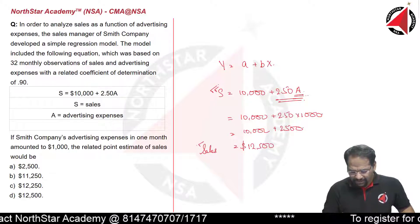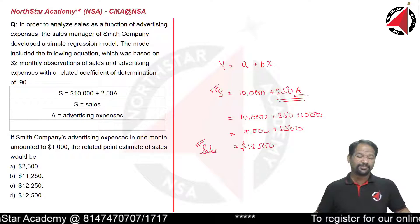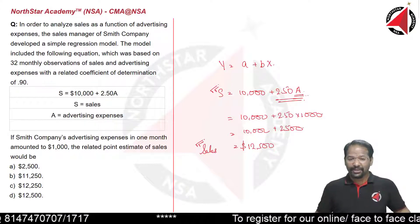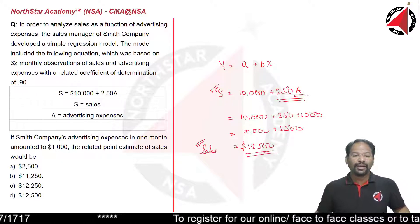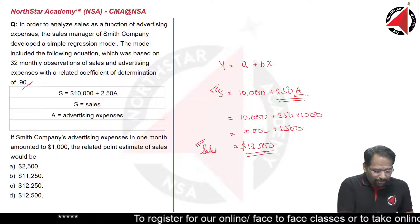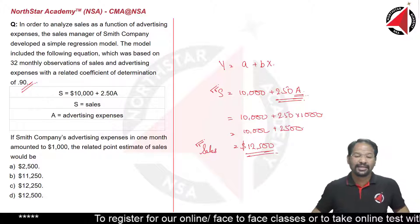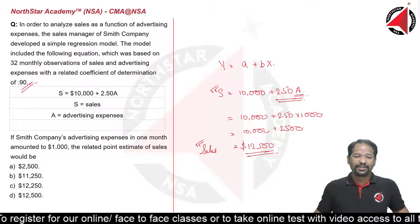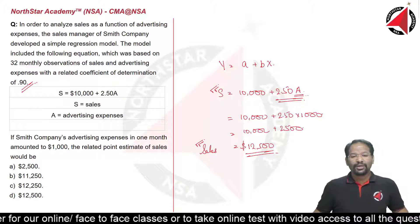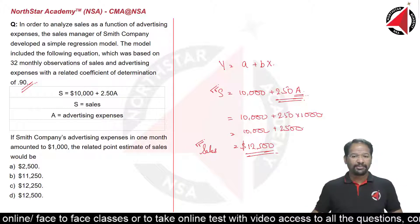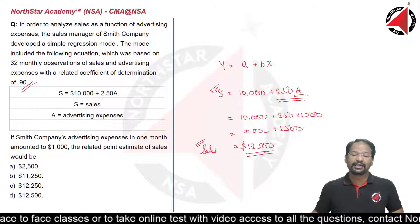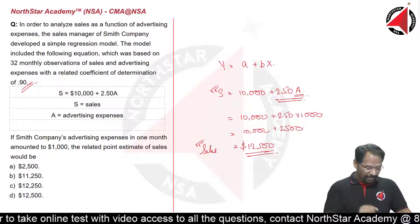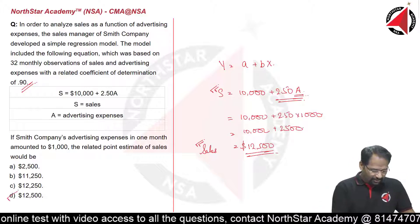In other words, the total sales the company would achieve if advertising expense is $1,000 for a particular month is $12,500. You may ask what we do with the 0.90 — this is additional information just to confuse you. The coefficient of determination represents the relationship between the independent and dependent variable, but it was not asked in the question at all. So the correct option is D: $12,500.